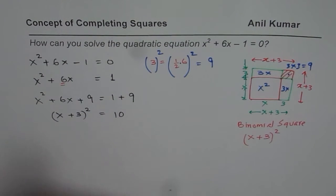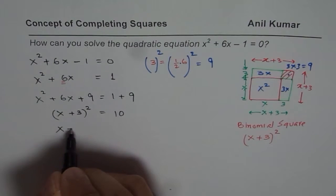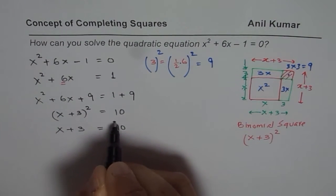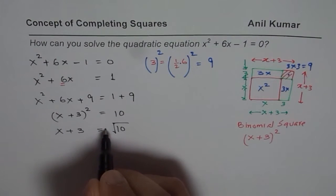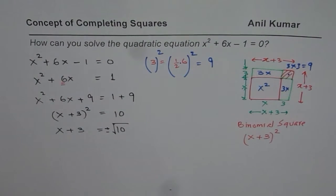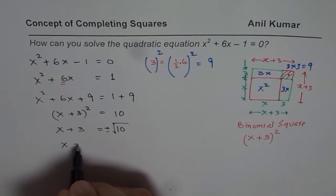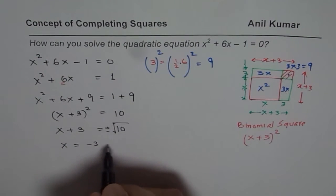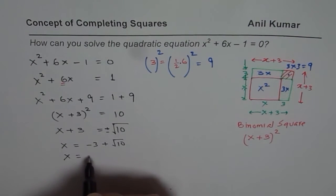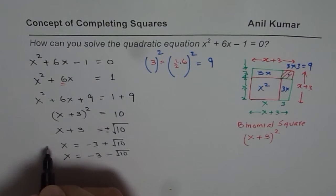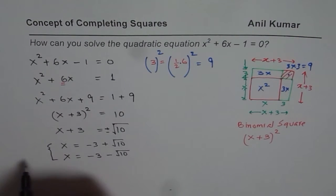Now we can square root both sides and solve. So we get x + 3 equals to square root of 10. Remember, square root of 10 should always be with plus and minus sign. So that gives us two solutions. One is x = -3 + √10 and the other one is x = -3 - √10. So these are the two solutions for us.